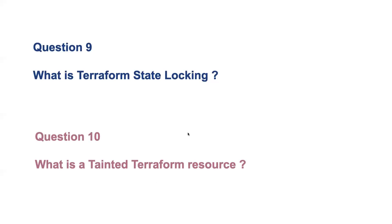Next: what is a tainted Terraform resource? The terraform taint command informs Terraform that a particular object has been degraded or damaged. Terraform marks this resource as tainted in the state file, and the next time you run terraform plan, Terraform will propose to replace that object, indicating that the resource is degraded or damaged and that you need to take action on it.